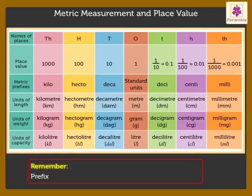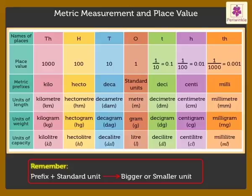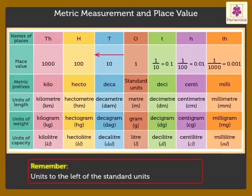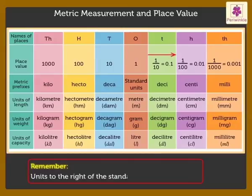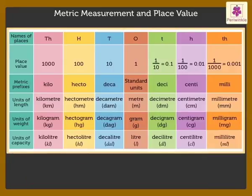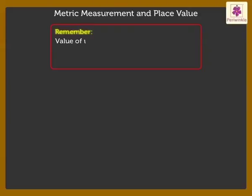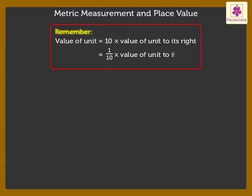Students, remember: we attach certain prefixes to standard units to obtain bigger or smaller units. The units appearing to the left of the standard units are bigger. The units appearing to the right of the standard units are smaller. The value of a unit is ten times the value of the unit to its right, and one tenth times the value of the unit to its left.